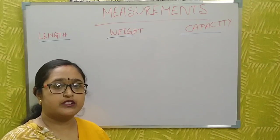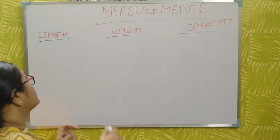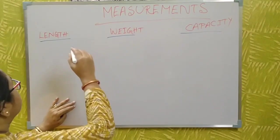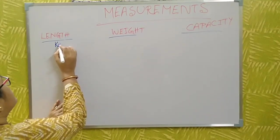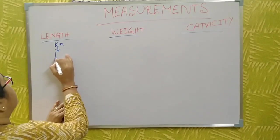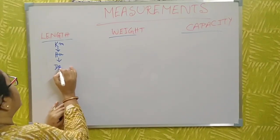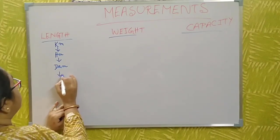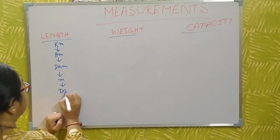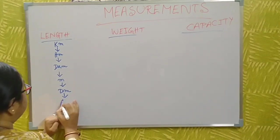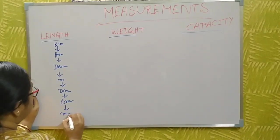Now I will discuss the various units of measurement. First, length. The length unit starts from kilometer, then hectometer, then decameter, then meter, then decimeter, then centimeter, then millimeter.